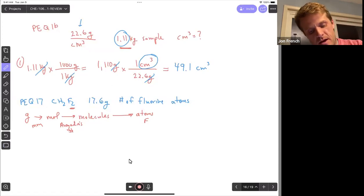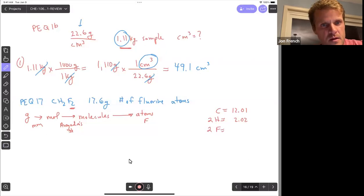First things first, we need the molar mass. So I've got carbon at 12.01. I've got two hydrogens. So that's 2.02. And I've got two fluorines. So that's 38. Add that all together. 52.03 grams per mole.